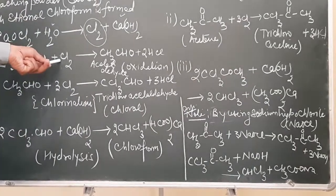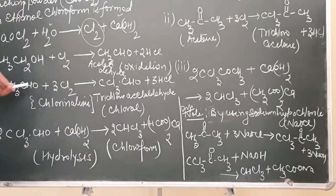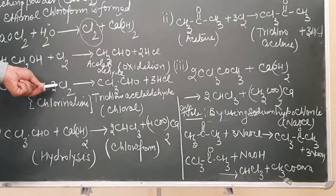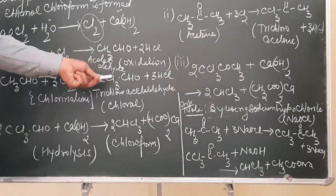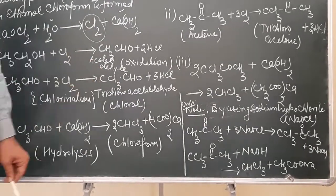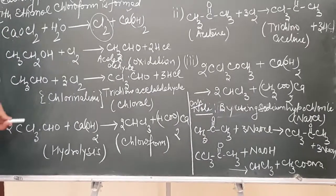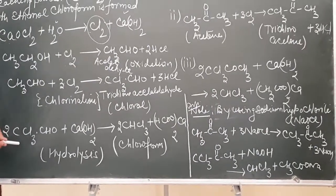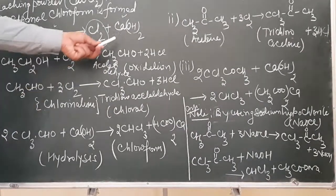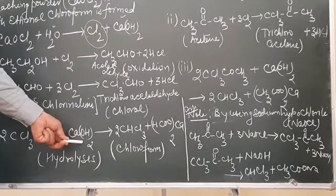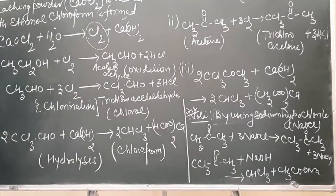So in the first step, chlorine acts as an oxidizing agent. In the second step, chlorine acts as a chlorinating agent and results in the formation of chloral. In the third step, hydrolysis will take place, and the calcium hydroxide liberated in the first step will hydrolyze chloral.